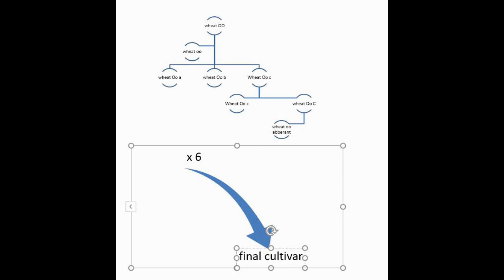Next, we'll talk about a floret. Florets are the grain flowers. Next, we'll talk about the rachis. The rachis is the axis that the florets are attached to. Next, we'll talk about the rachella. This is the axis where the spikelets are attached to.